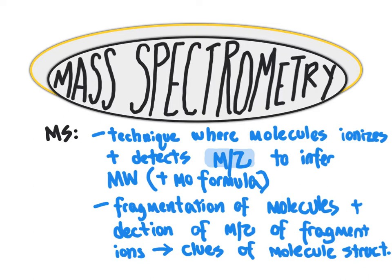How does a mass spectrometer work? How does it enable us to ionize molecules, detect those ions, and use that information to infer molecular weight? And how does a mass spectrometer enable the fragmentation of molecules and allow us to look at the mass to charge ratios of those resulting fragment ions? Let's take a walk through the mass spectrometry instrument and look at an overview of how a mass spectrometer accomplishes ionization and detection.